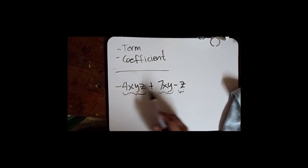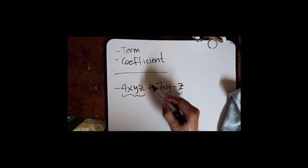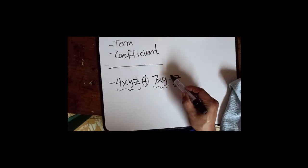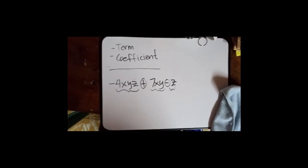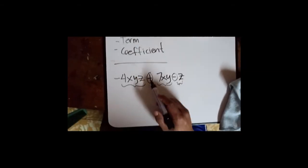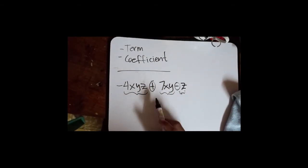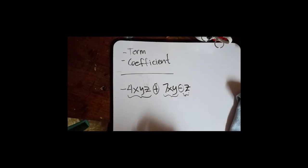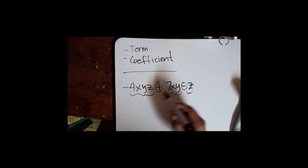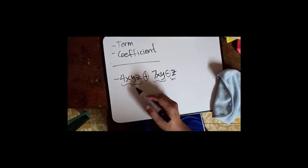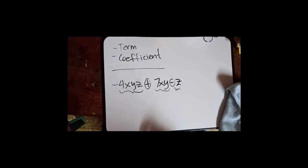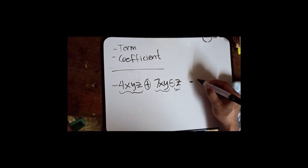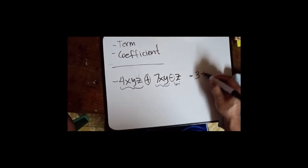As you can observe, we are always looking for these operators. Terms are separated always by these operators: addition and subtraction. Therefore the terms that we have here is 3. So how many terms? Three terms.